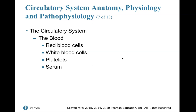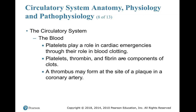Blood consists of red blood cells, white blood cells, platelets, and serum. Platelets play a role in cardiac emergencies through blood clotting — you need platelets for your blood to clot. Platelets, thrombin, and fibrin are components of clots. A thrombus may form at the site of plaque in a coronary artery. Plaque buildup from cholesterol and fatty foods causes thrombin, fibrin, and platelets to collect and attach, causing a thrombus — a blockage. If you ever hear about thrombolytic drugs, those are clot busters.